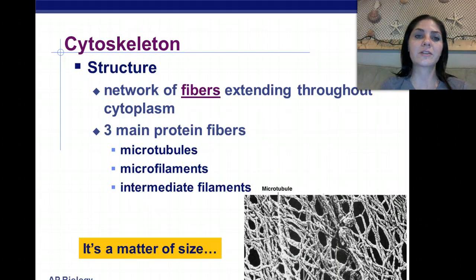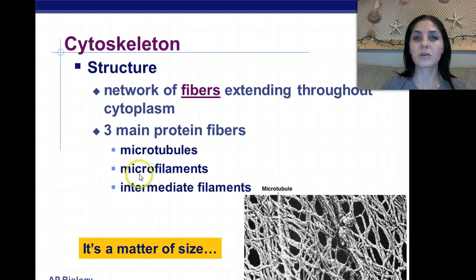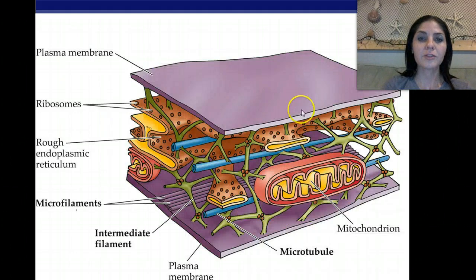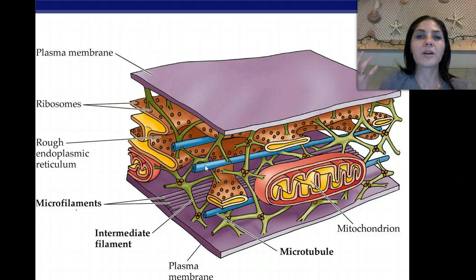So the structure of the cytoskeleton: it's composed of a network of fibers that extend throughout the cytoplasm, and there are three main types of protein fibers. We have microtubules, which are the largest. We have microfilaments, which are the smallest. And then the intermediate filaments, which are in the middle, or in between sizes. Looking at this cross-section of a plasma membrane, we have our intermediate filaments right here. These serve as real support, kind of like the rods and steel and wood that you use when you're making the frame of a building or a house — that's the same function that those intermediate fibers have.